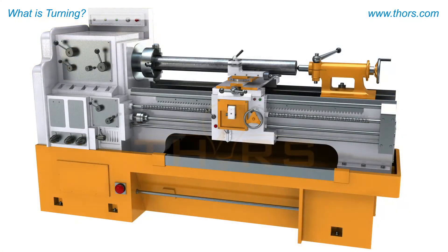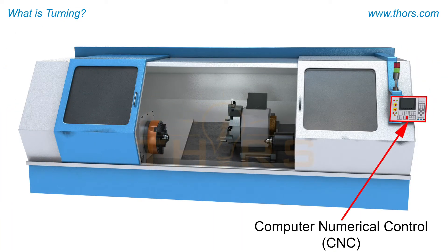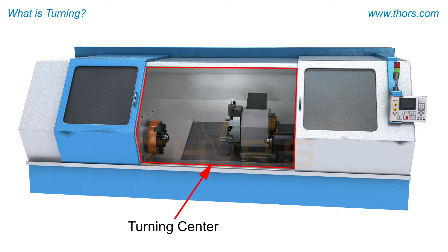Turning is performed on a piece of equipment called a lathe. Manually operated lathes have been used for centuries and are still used today. Most modern high-volume operations depend on computer numerical control, or CNC. CNC lathes are also referred to as turning centers.